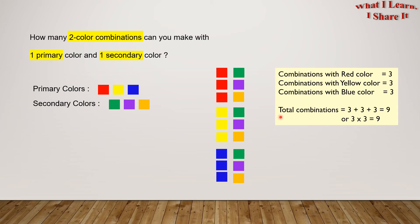So total combinations are 3 plus 3 plus 3 equals 9, or 3 times 3 equals 9. So total combinations equals 9. Yay!